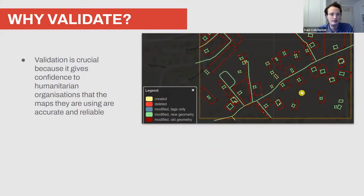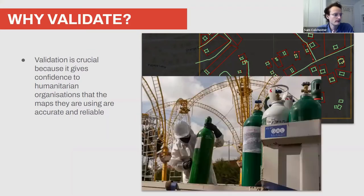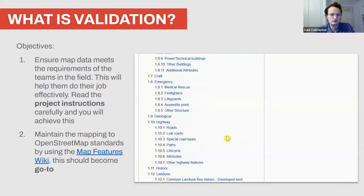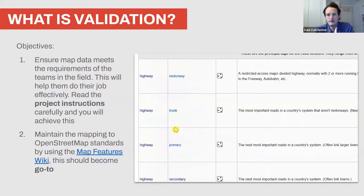Those inaccurate shapes wouldn't have given an accurate count of buildings or accurate maps at all — it's a really crucial step. These maps were then used to actually deliver oxygen to households; we wouldn't have been confident in their quality unless they'd been validated.